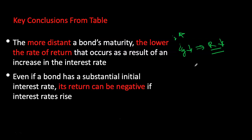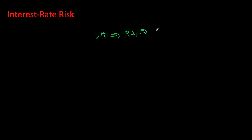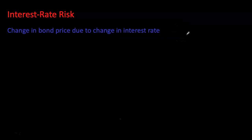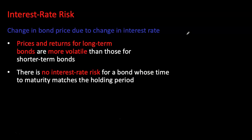This phenomenon — interest rates rising or falling causing prices to fluctuate and returns to become higher or lower, even negative — is called interest rate risk. We can describe it as the change in bond price due to the change in interest rates. Longer time to maturity means bigger price fluctuation and therefore higher volatility, so long-term bonds are exposed to higher interest rate risk. If your holding period is exactly the same as your time to maturity, there is no interest rate risk — in that case you receive the yield to maturity you expected at the time of purchase.